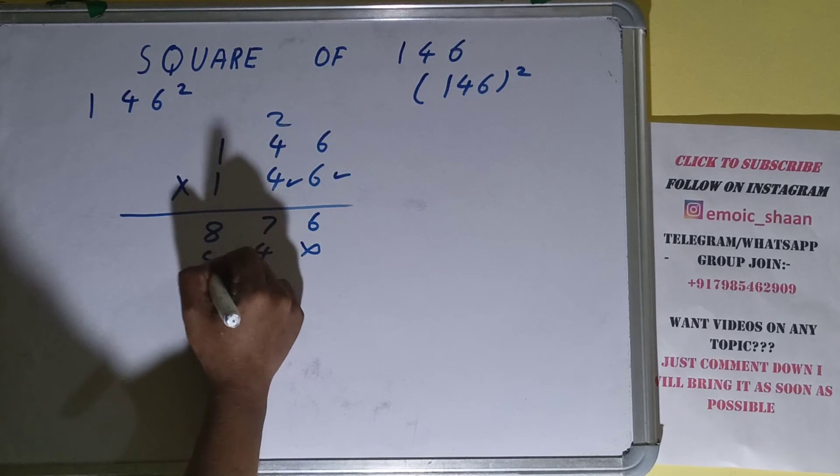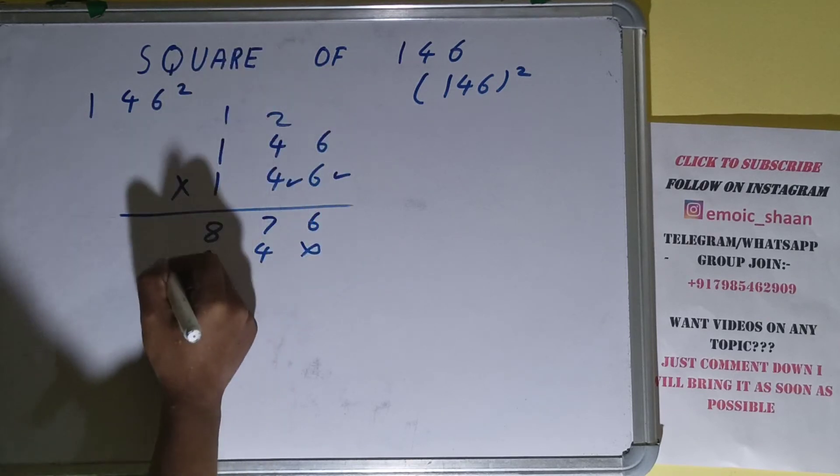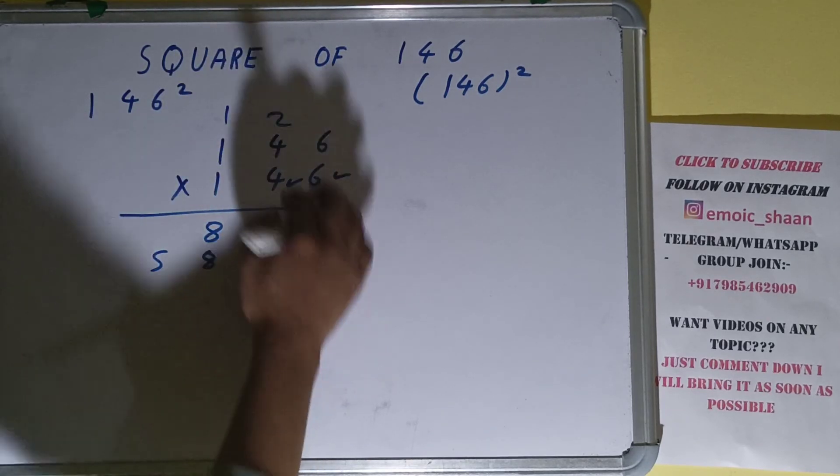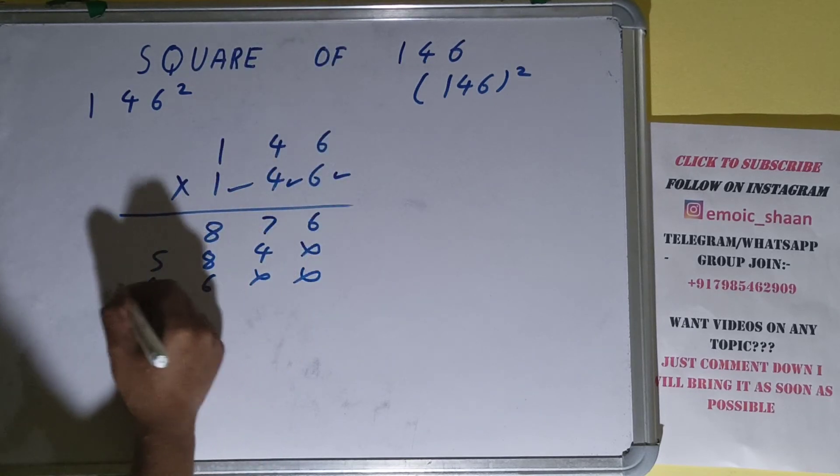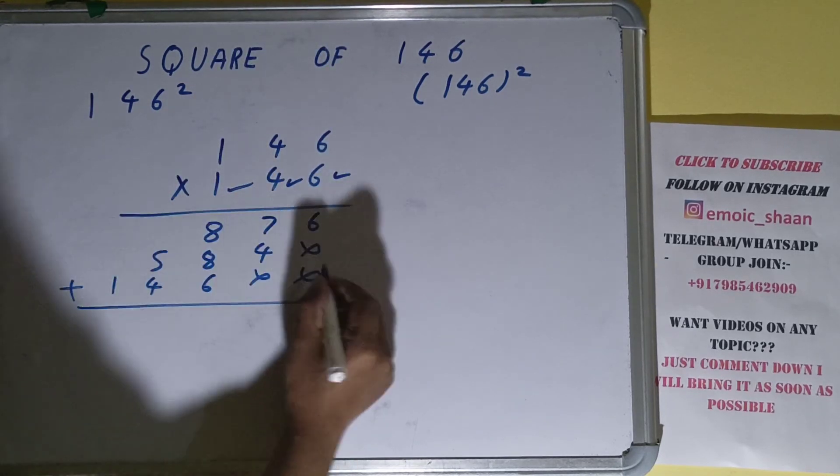- four fours are 16 plus two is 18, one carry. Four ones are 4 plus one is 5, done with it. Now the last one: one times six is 6, one times four is 4, one times one is 1. Just add them: 6